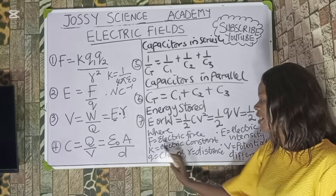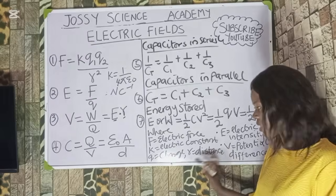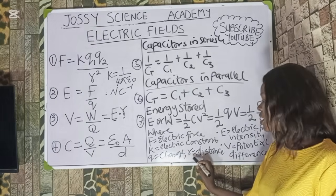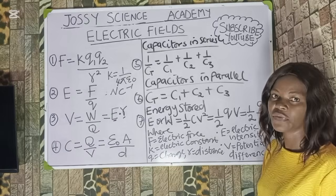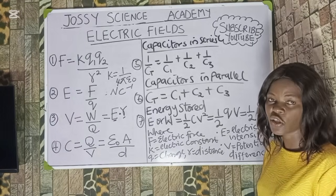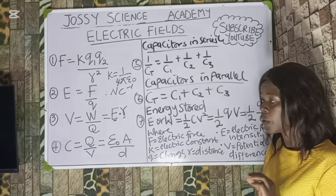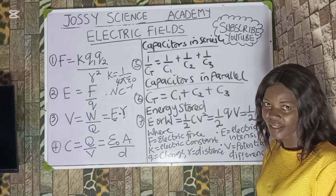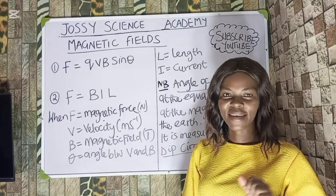Key parameters for electric field: F is electric force, k is electric constant, Q or q are charges, R is distance, E is electric field intensity, V is electric potential, C is capacitance of a capacitor, and W is work done.